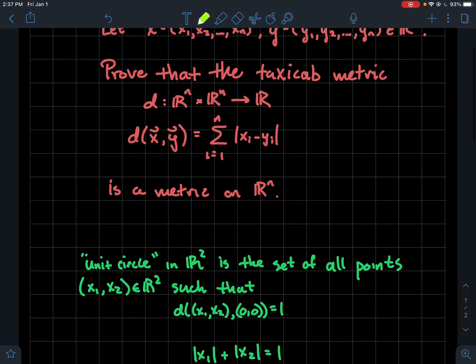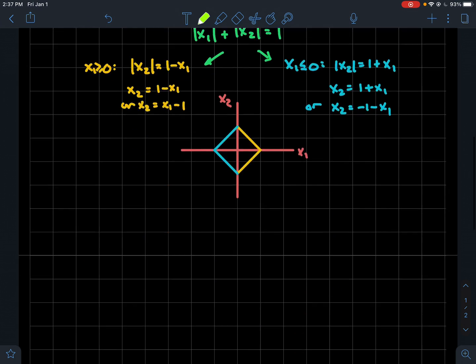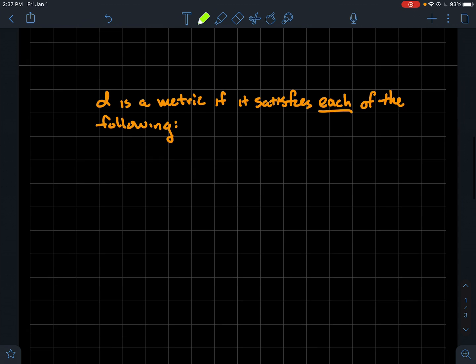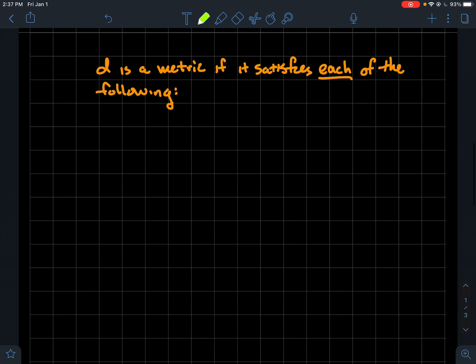So let's get back to the proof at hand. I hope that makes you feel a little bit more familiar with what the taxicab metric does. But let's actually prove that it's a metric on R^n now. So we just looked at an example when the dimension is 2. Let's do this in general. So if you've seen the video that I made on the discrete metric, there are four things that I'm going to check to determine if d is a metric. So d is a metric if it satisfies each of the following.